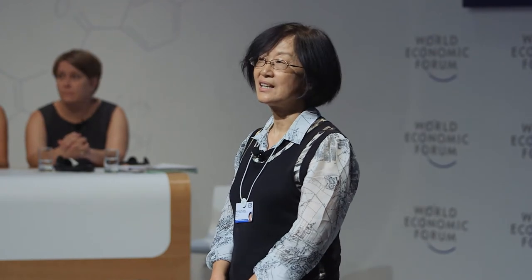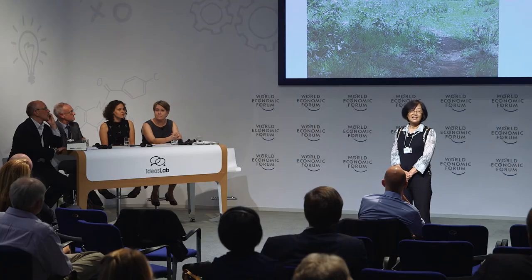In this map of water scarcity, the major water-scarce regions are in the middle latitudes of the northern hemisphere. In sub-Saharan Africa, there isn't physical water scarcity.